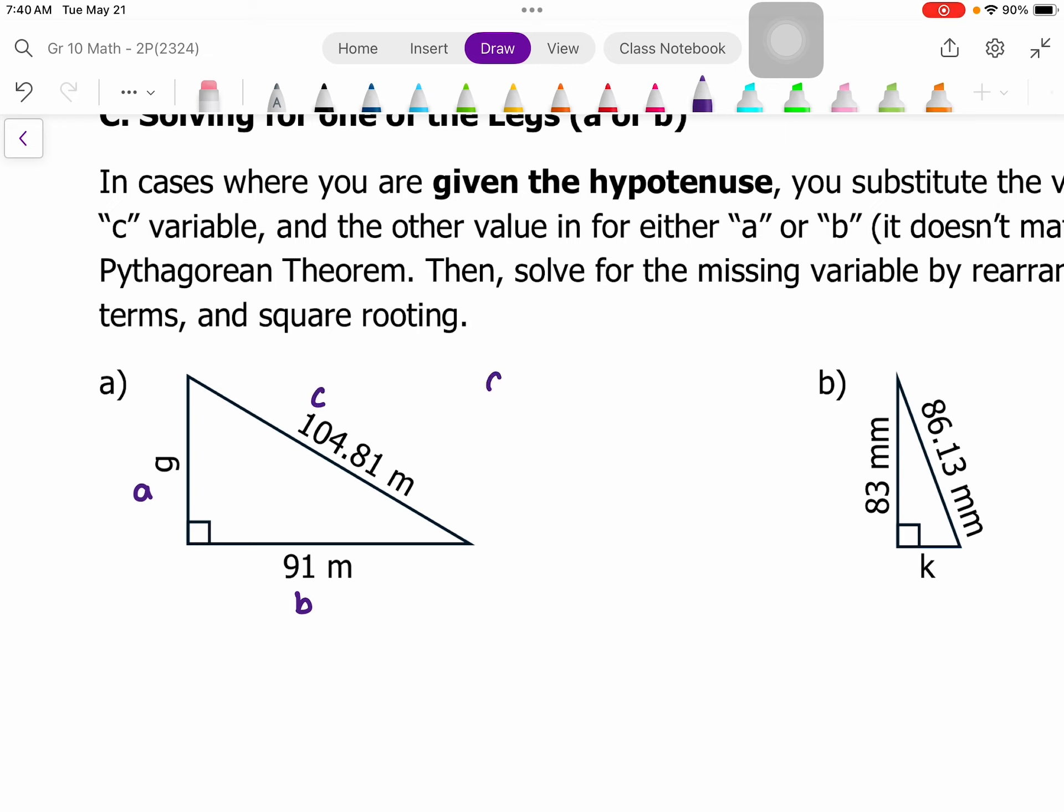So in a squared plus b squared equals c squared, a is g, b is 91, and c is 104.81. Now to solve for g squared, I need to isolate it. I need it by itself, so I need to move that 91 squared. So I'm going to subtract both sides by that.